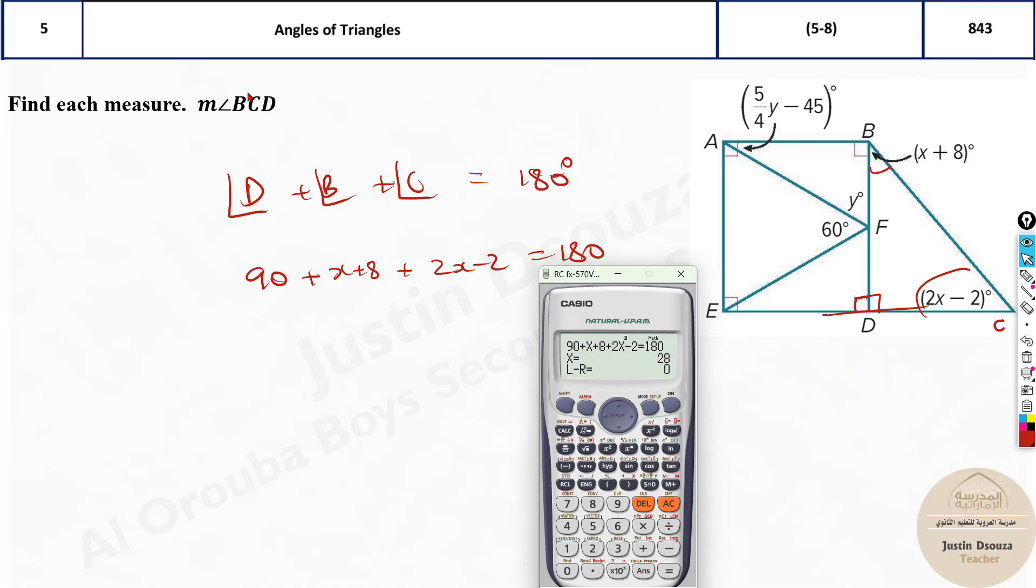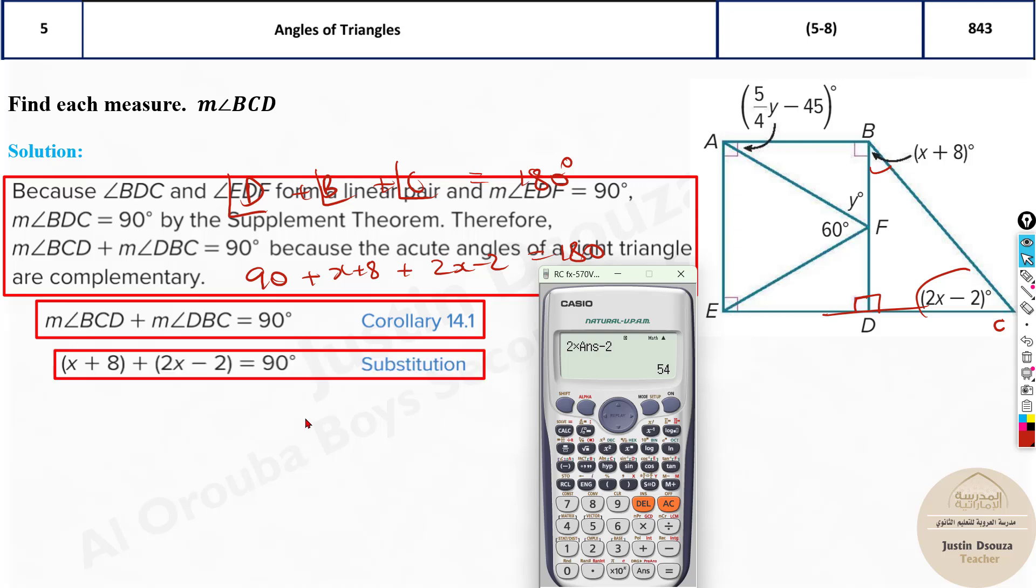But that is not a final answer. We need to find BCD, not the x value. So now substitute x over here. So it will be 2 times the answer, which is 28, minus 2. That is the answer, 54. You can see the x value is 28. The measure of BCD is 54. So that's the answer.